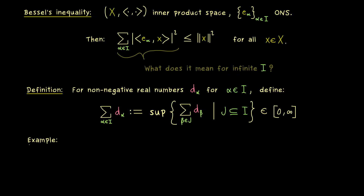For example, if the index set is the real number line and we sum the absolute value of x, then any finite subsum can be as large as we want, so the supremum is infinity. However, in Bessel's inequality the index set I could also be the real numbers, but in contrast to that example, Bessel's inequality tells us that infinity never comes out — the supremum is always a finite number. That is the strength of Bessel's inequality: this uncountable sum is actually not so bad.